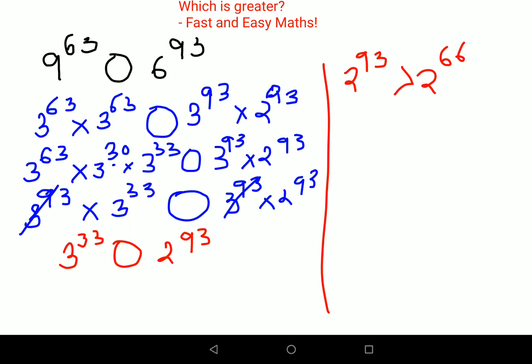You must be wondering why I said 2 raised to 66. I know that between 3 raised to 33 and 4 raised to 33, 4 raised to 33 is greater. So I have tried to put this in the form of 4 raised to 33.